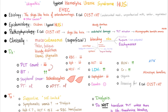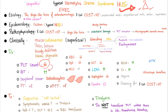Diagnosis: platelet count is low — that's the thrombocytopenia part of the triad. Low platelet count automatically prolongs bleeding time. On peripheral smear you will see schistocytes — fragmented red blood cells or helmet cells. PT and PTT are absolutely normal because the coagulation cascade (secondary hemostasis) is fine. Red blood cell count is low, hemoglobin is low, hematocrit is low — that is anemia. MCV is normal — normocytic anemia. LDH is high and haptoglobin is low — that's hemolytic normocytic anemia. Coombs test is negative — non-immune hemolysis. BUN and creatinine are high due to acute renal failure. Oliguria and hypertension can also occur.